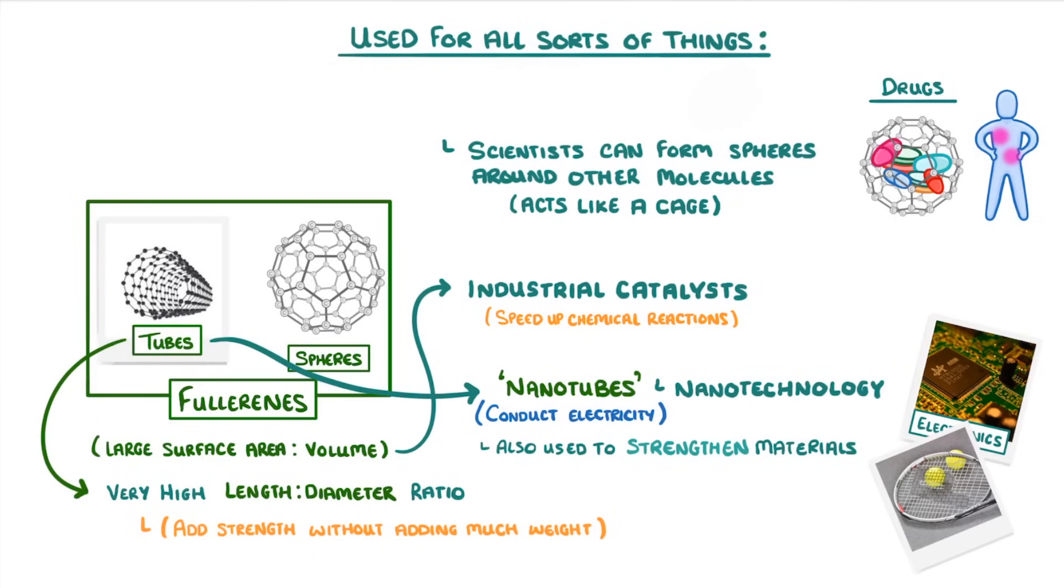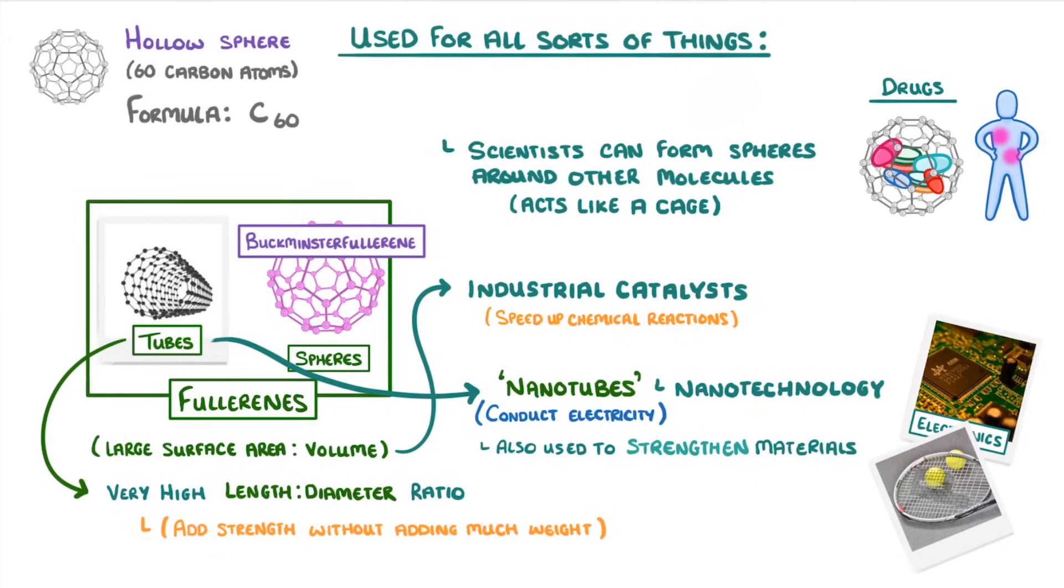The very first fullerenes made, though, was one of these spheres, called the Buckminster Fullerene, which is a hollow sphere made of 60 carbon atoms, so it has the formula C60.